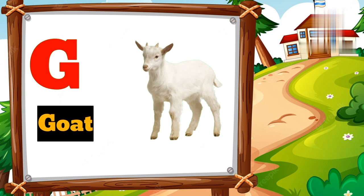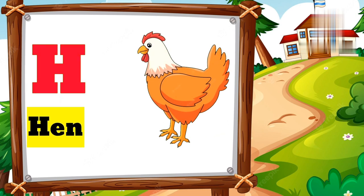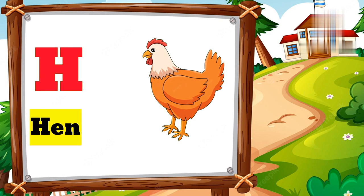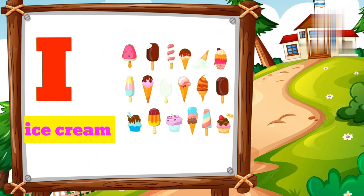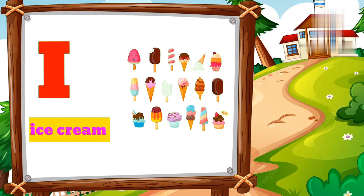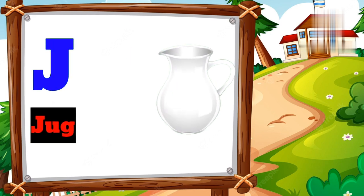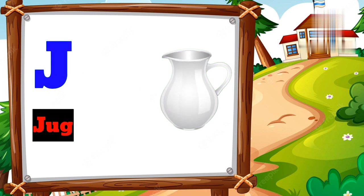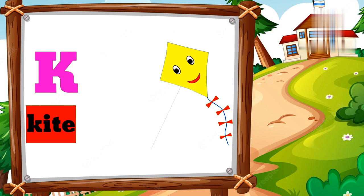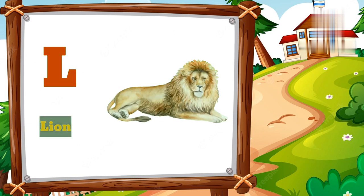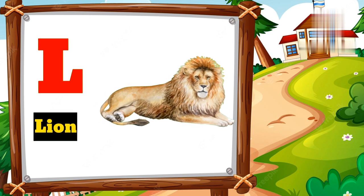G for goat. H for hint. I for ice cream. J for jug. K for kite. L for lion.